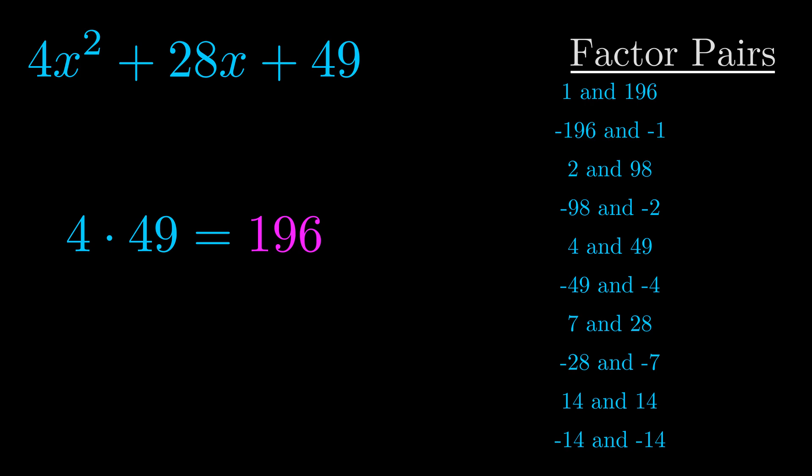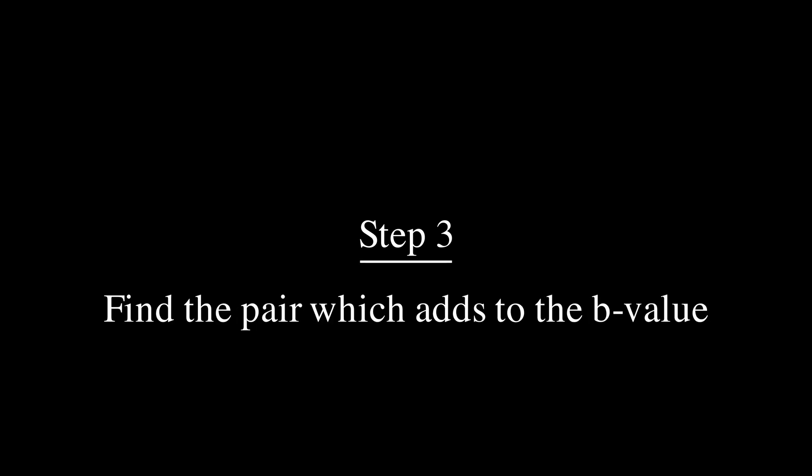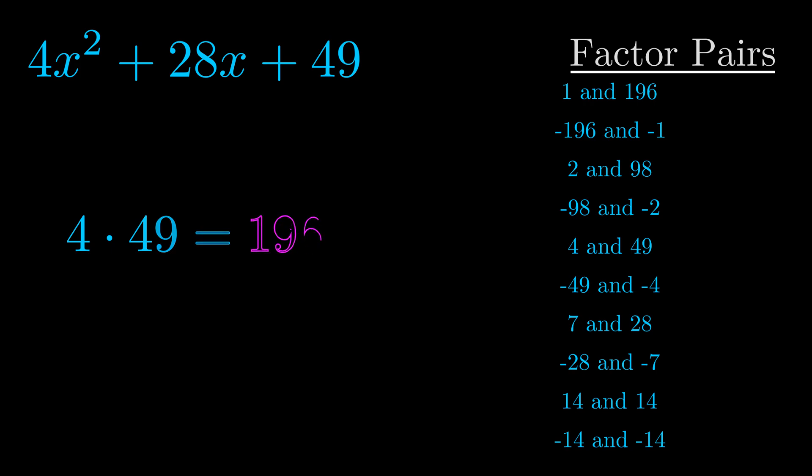Now once you have these factor pairs, the goal is to find which of these pairs adds to the b value. The b value is the coefficient on the x term—that's the middle term, the one that we haven't done anything with yet. And really, this is the only factor pair that we need.